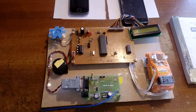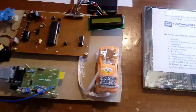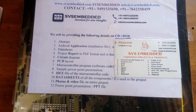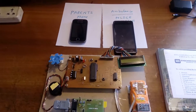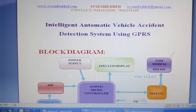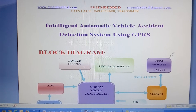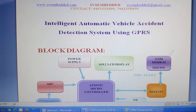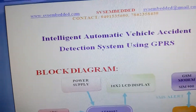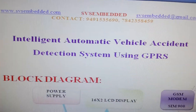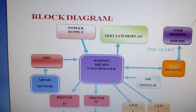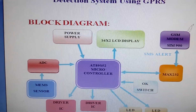Good morning, we are from SVS Embedded. The project title is called Intelligent Automatic Vehicle Accident Detection System using GPRS. In this project, I am using an AT89S52 microcontroller, which is an 8-bit microcontroller.